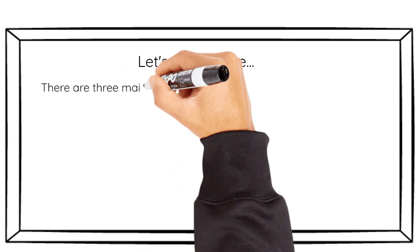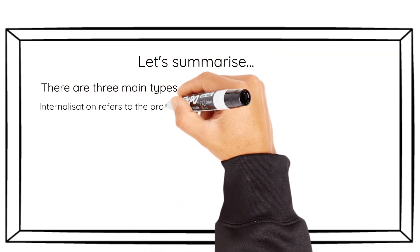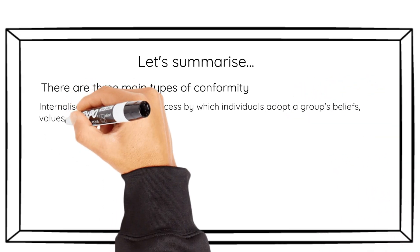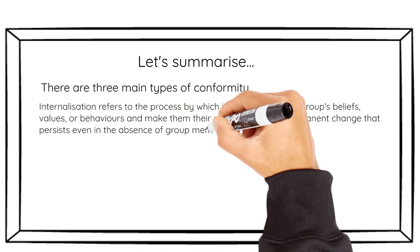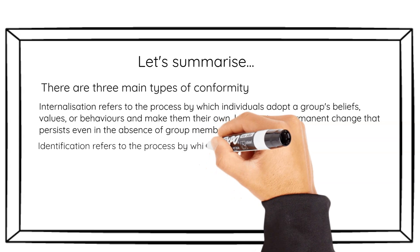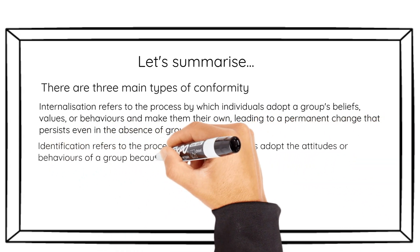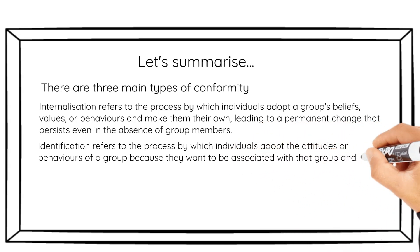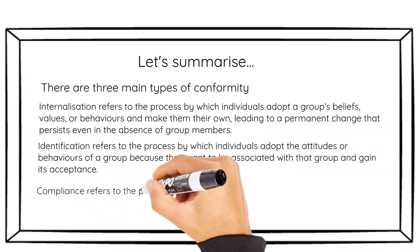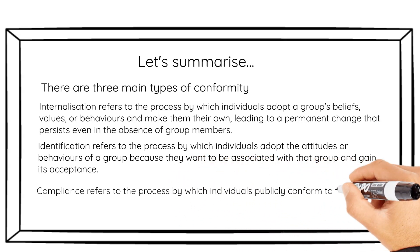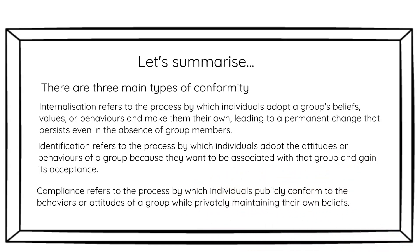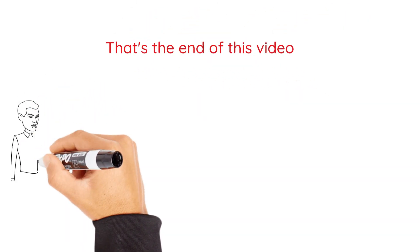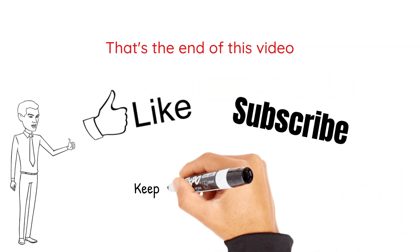Let's summarise what we've learned. There are three main types of conformity. Internalization refers to the process by which individuals adopt group beliefs, values, or behaviours and make them their own, leading to a permanent change that persists even in the absence of group members. Identification refers to the process by which individuals adopt the attitudes or behaviours of a group because they want to be associated with that group and gain its acceptance. Compliance refers to the process by which individuals publicly conform to the behaviours or attitudes of a group while privately maintaining their own beliefs. That's the end of this video — please like and subscribe and keep an eye out for part two of our social influence series.